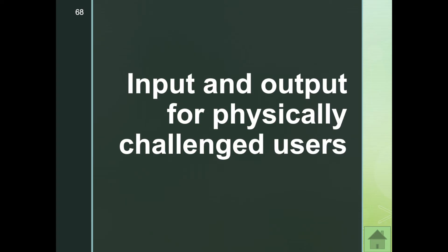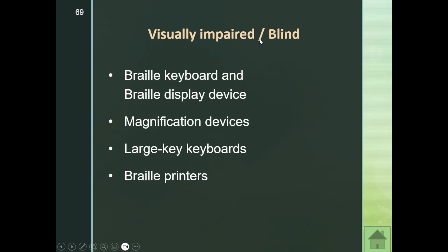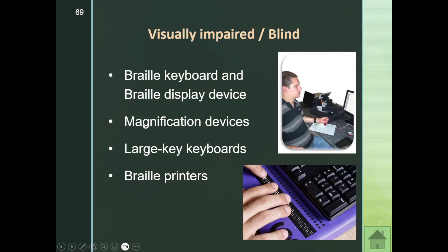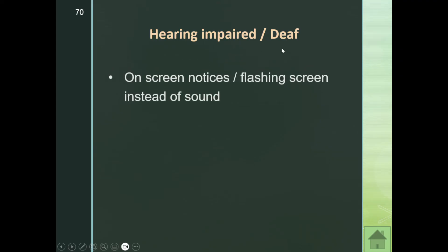The last section covers input and output for physically challenged users. Please be aware there is a difference between a visually impaired individual — like someone who wears glasses — as opposed to someone who is blind. A visually impaired person can see partially; a blind person cannot see at all. So read the question carefully. A braille keyboard and braille display device are for someone who is blind. A magnification device — making what's on screen larger — is for someone who is visually impaired.